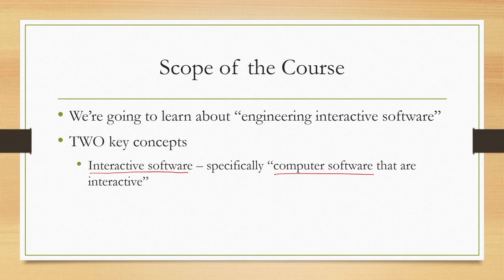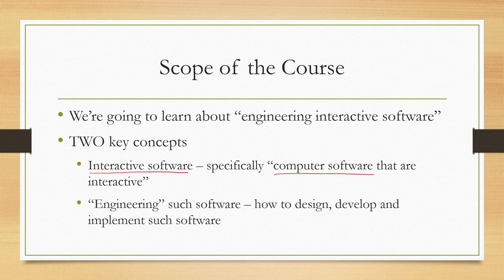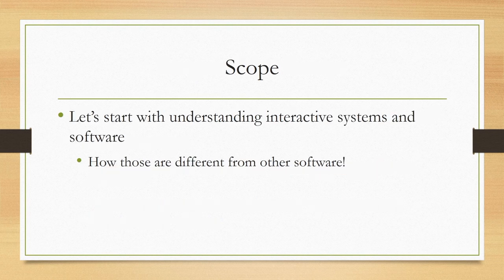The second concept that is important here is that word engineering. Here we actually refer to the fact that such software can be developed in a very systematic manner involving stages, and we are going to learn about those stages. Given the scope of the course, let us begin with the major concept that is involved here - that is interactive software or interactive system in general, where we will be implicitly referring to software whenever we use the term interactive system.